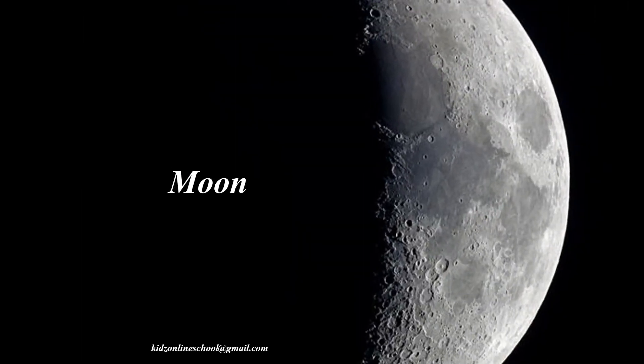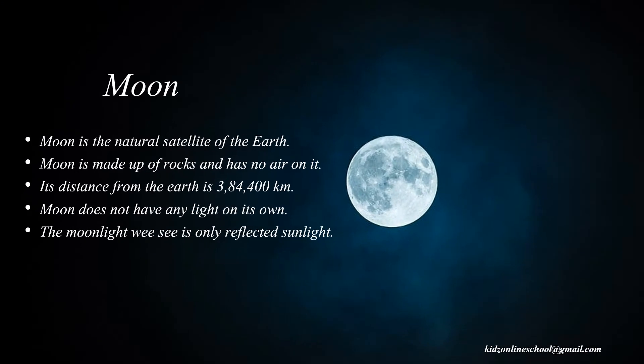Now we are going to see about the Moon. Moon is the natural satellite of the Earth. It is made up of rocks and has no air on it. Its distance from the Earth is 3,84,400 km. The Moon does not have any light of its own — the moonlight we see is only reflected sunlight.